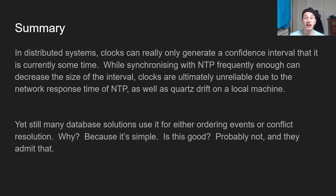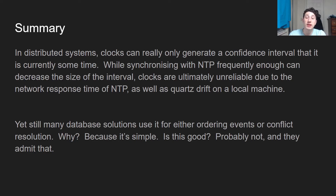Summary — I told you this one was quick. In distributed systems, clocks really are not reliable. They can really only just generate a confidence interval that it is currently between some minimum time and some maximum time. And even though that confidence interval is solid if we're synchronizing with NTP really frequently, at the end of the day there is a possibility of introducing a lot of time-based bugs, and it's really not an ideal solution.